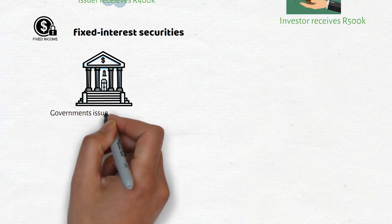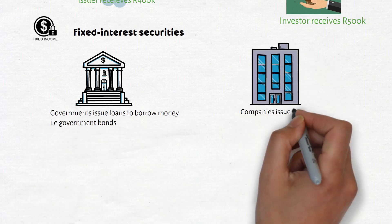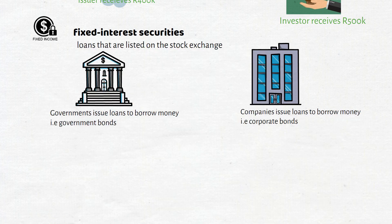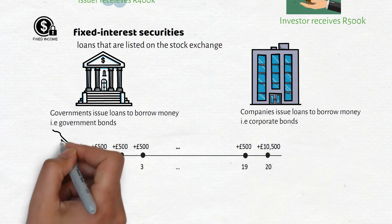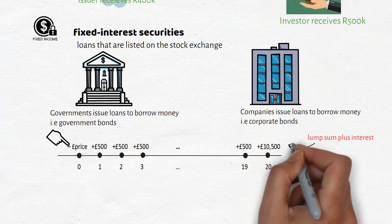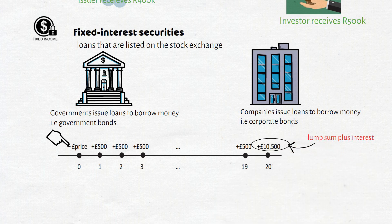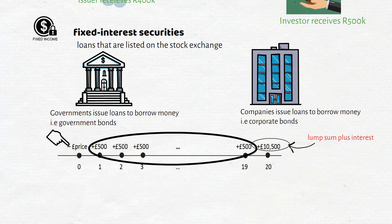Now let's talk about fixed interest securities. When companies or governments need to borrow money, they can issue loans that are listed on the stock exchange. These loans are known as fixed interest securities and are issued in bonds of a certain nominal amount. The bond holder will receive a specific lump sum on a specified future date and will also receive regular interest payments until the lump sum is repaid. These interest payments are also called coupons.